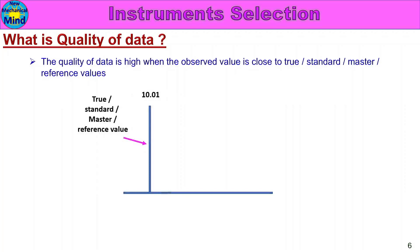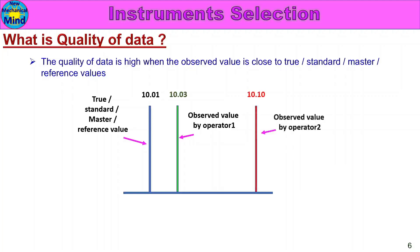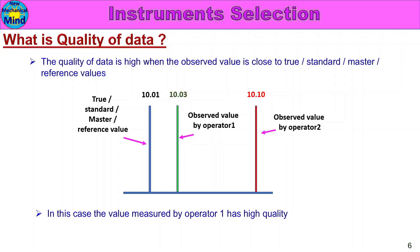10.01 is the reference value; that is the actual value of the part. Any error is 10.01. First, one operator will check — that part size is measured as 10.03. A second operator will check — measured as 10.10. In this case, the value measured by Operator 1 has high quality, as it is very close to the reference value. But the value measured by Operator 2 has low quality — measured as 10.10, showing greater variation. So the quality of data is less for Operator 2.